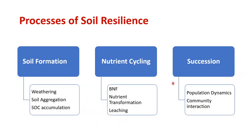The processes of soil resilience describe how the soil achieves resilience. For example: formation — how the soil was originally formed; weathering; soil aggregation — aggregate formation and the reservoir of soil organic carbon; nutrient cycling; biological nitrogen fixation; nutrient transformation; and leaching. If the soil has a lot of leaching losses it means it is not very resilient. The soil must have a microbial population to enhance or fix nitrogen from the atmosphere.